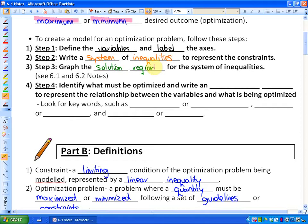Step four is the new part. We're going to identify what must be optimized and write what's called an objective function. So it's going to be something that we're asked to maximize or minimize to represent the relationship between the variables and what is being optimized. Some key words to look for would be maximum or minimum.